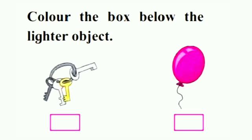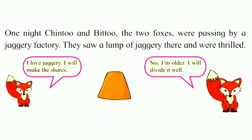The next question says: color the box below the lighter object. Here we are given the image of a balloon and a bunch of keys. The weight of the balloon is lighter and the weight of the bunch of keys is heavier, so we will color the box given below the balloon.